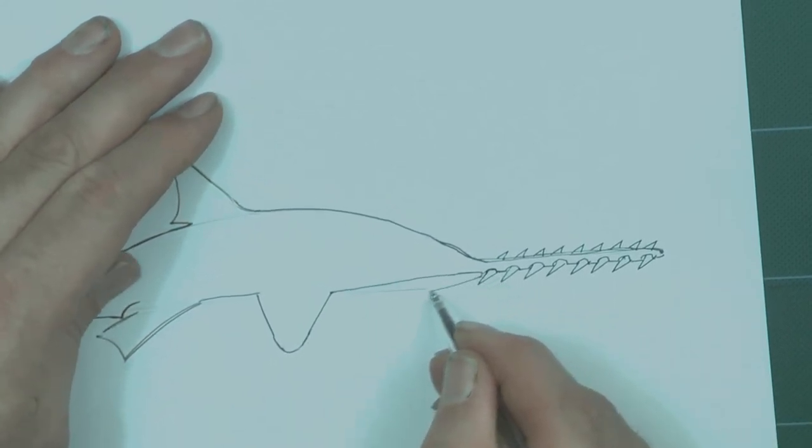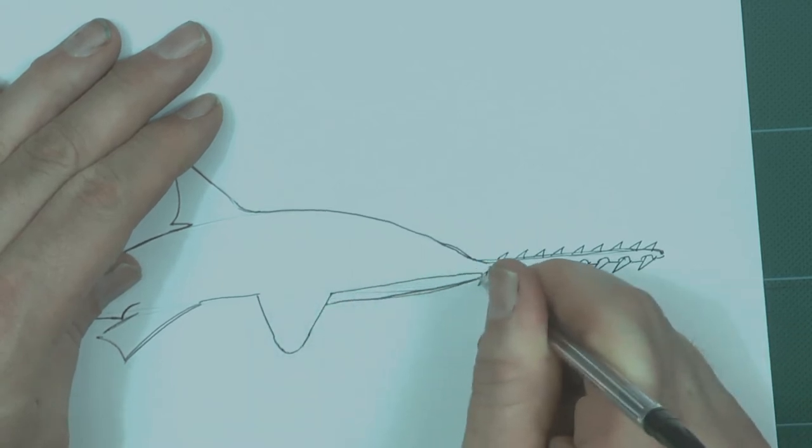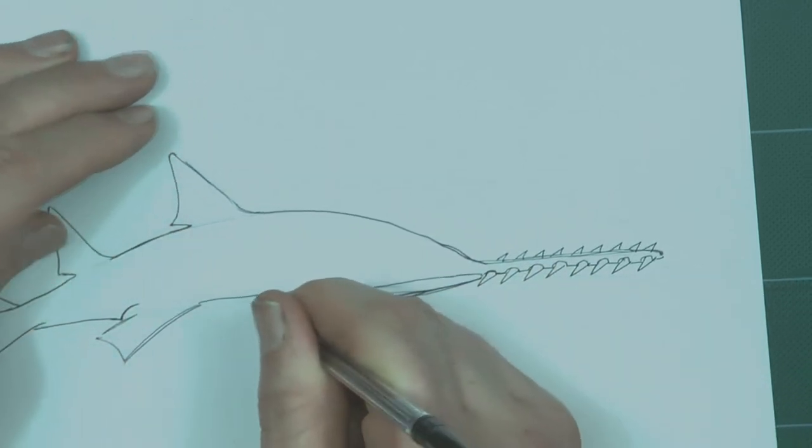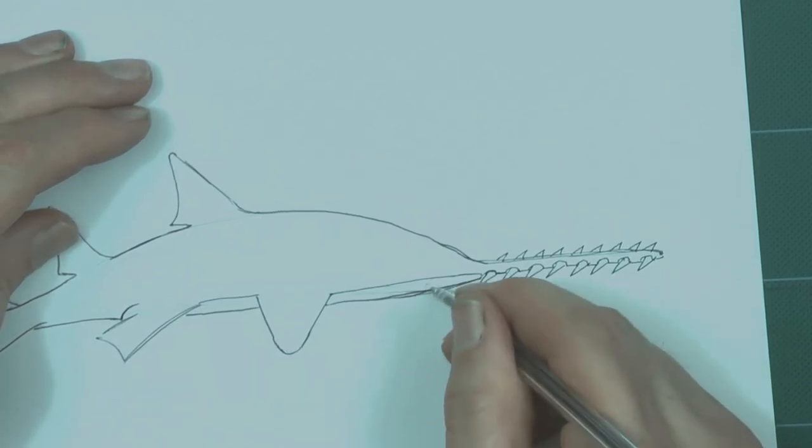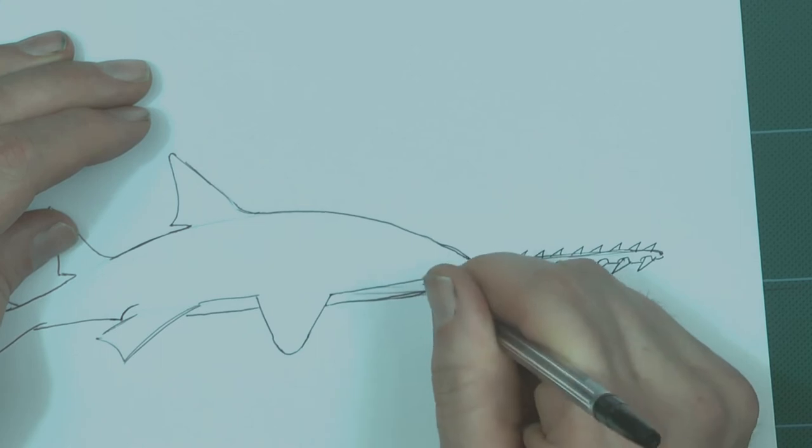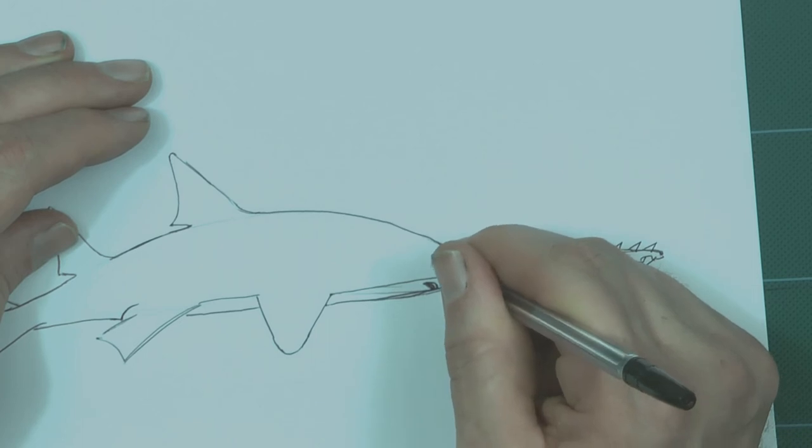Now under here. Bit of a line like this. Because I want to put in his mouth. And there. Okay. Let's put the mouth in. Which is. A bit like that. Put in the eye.